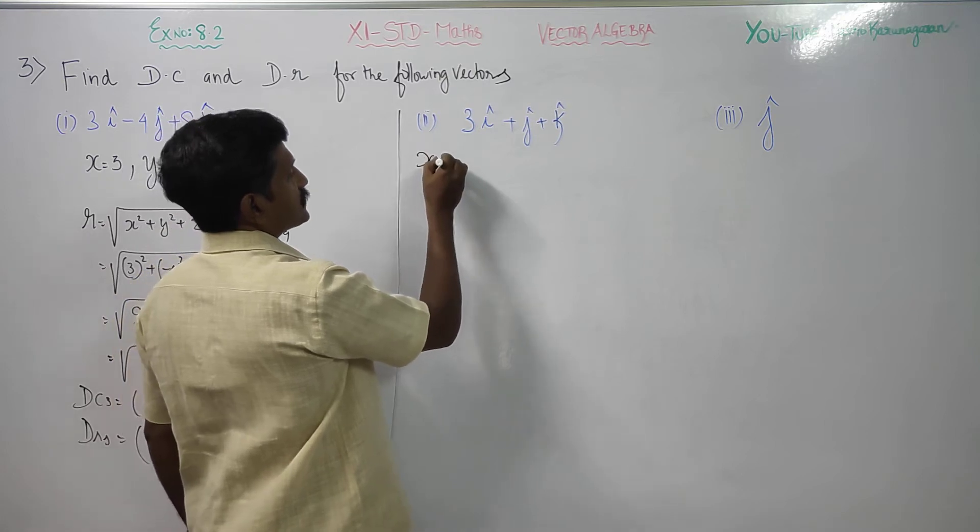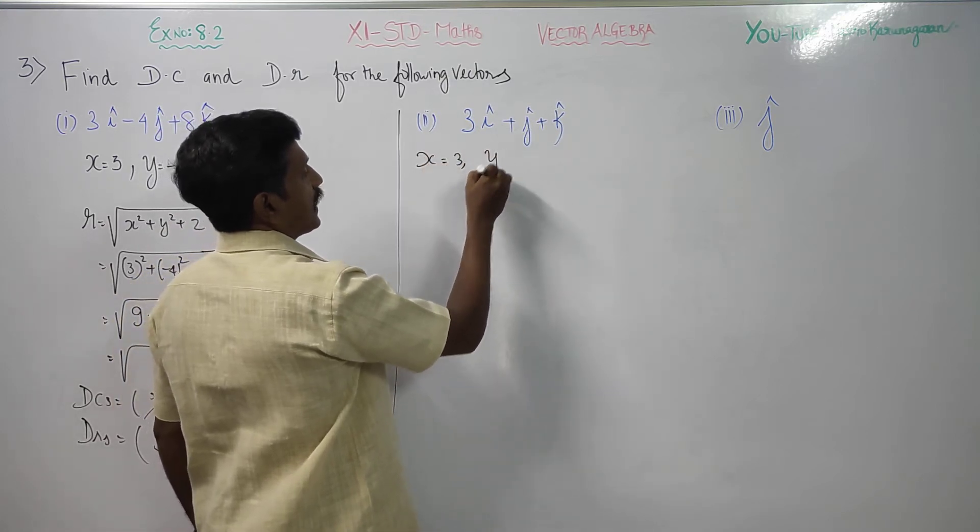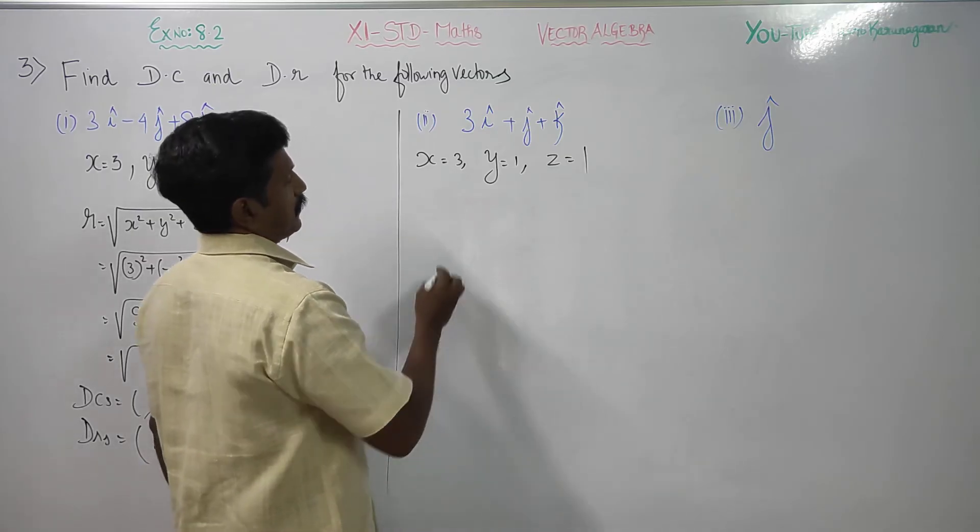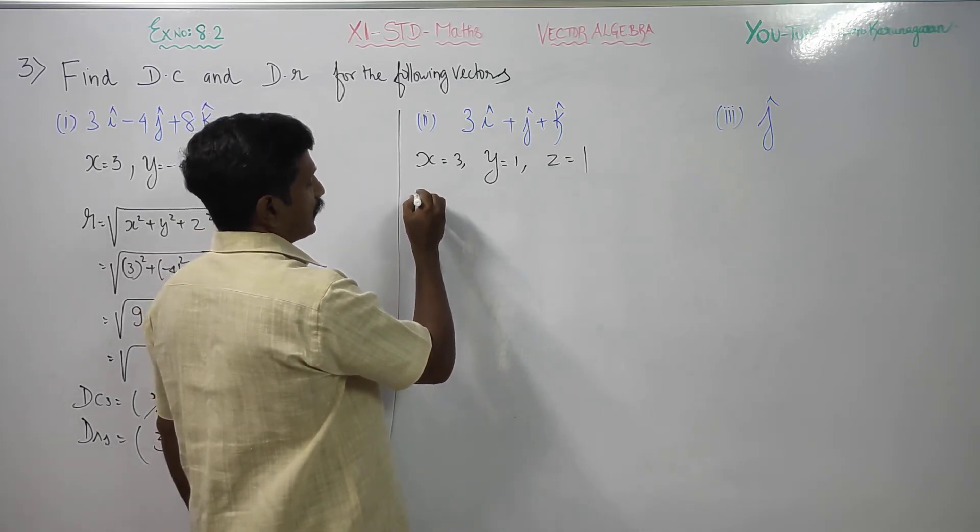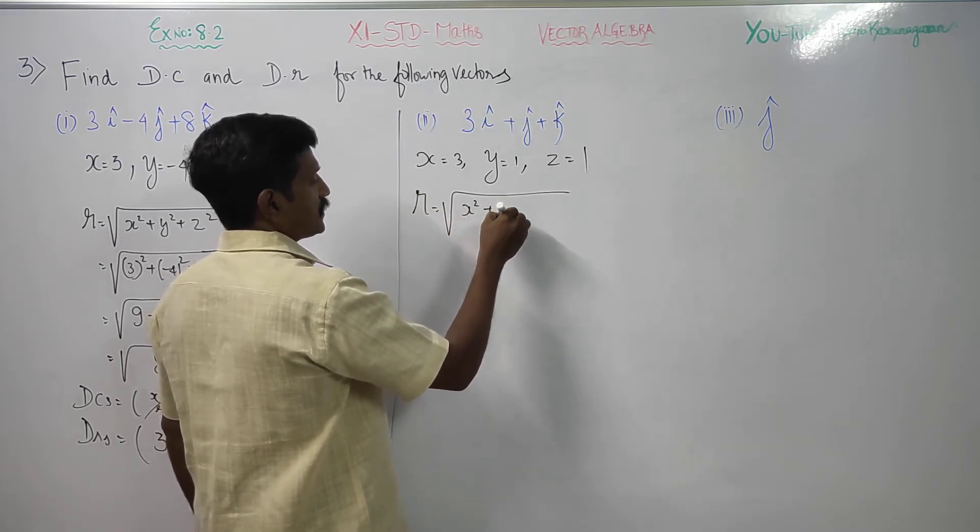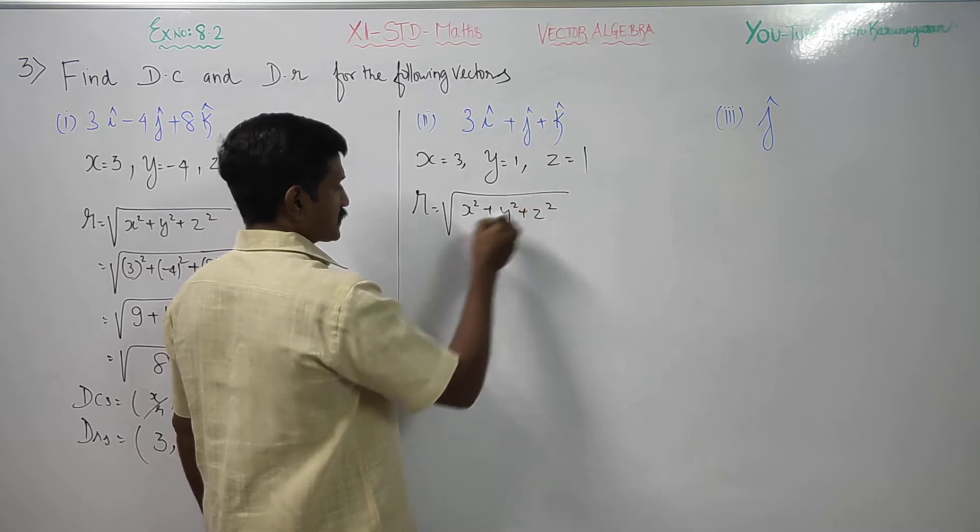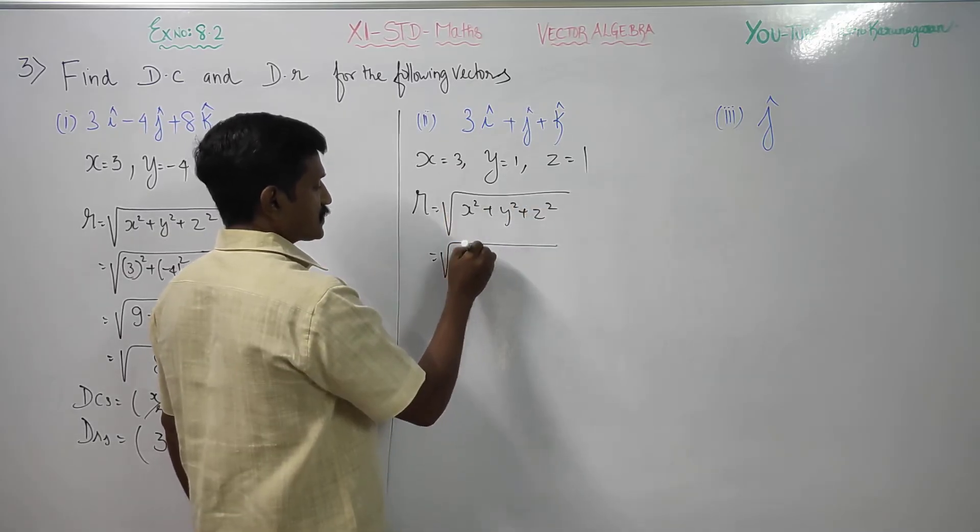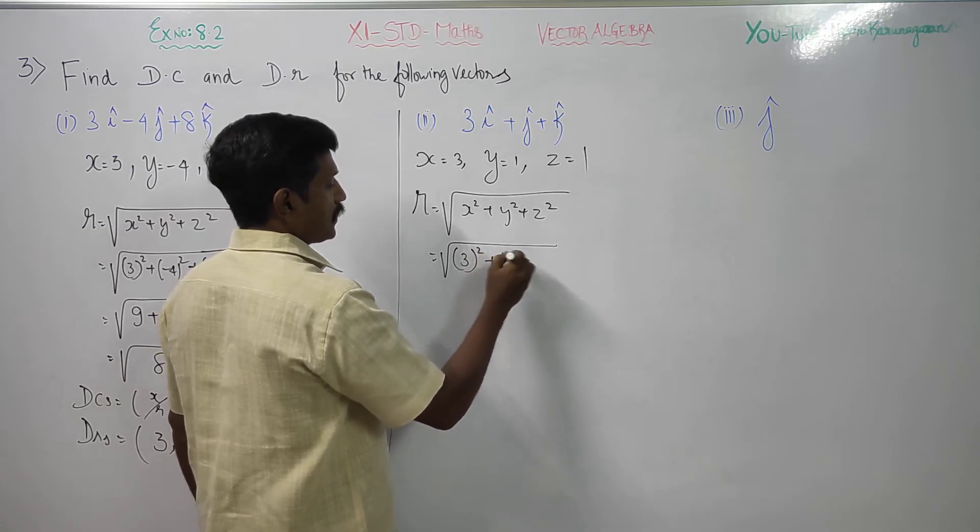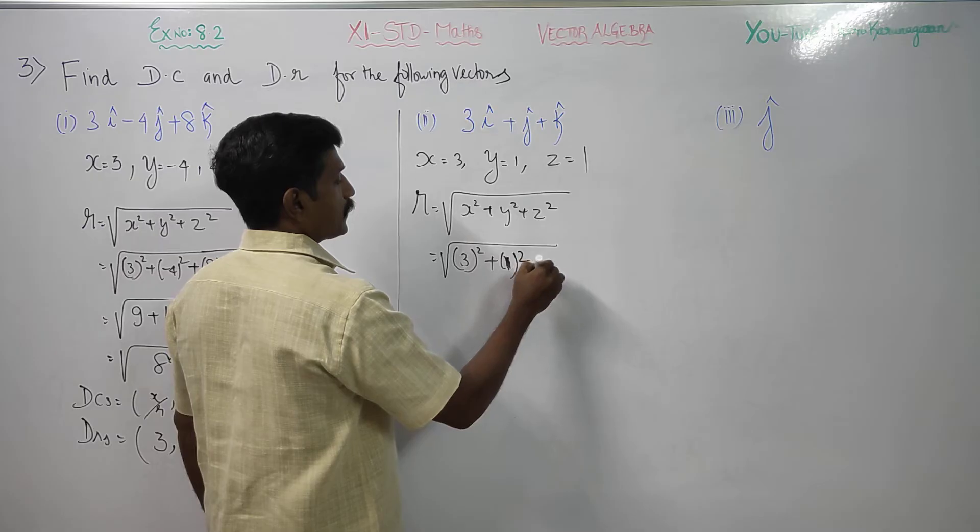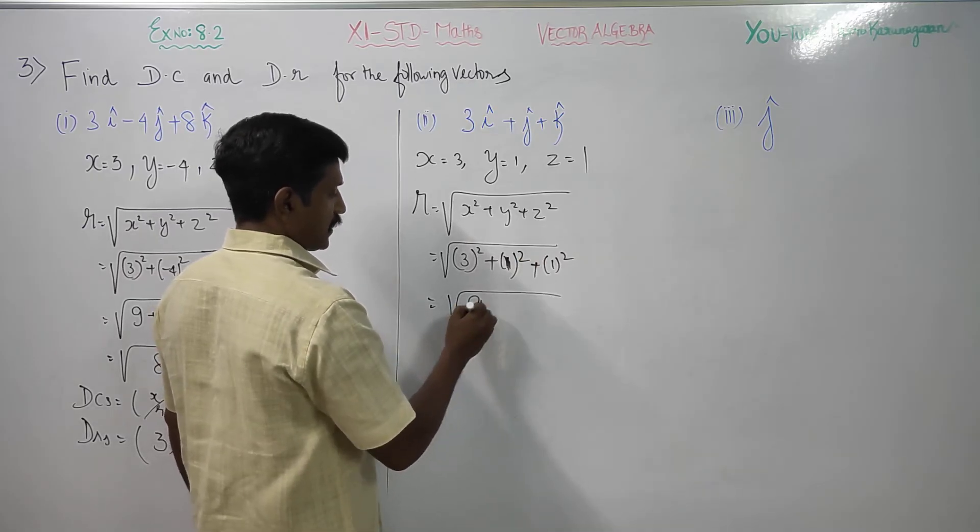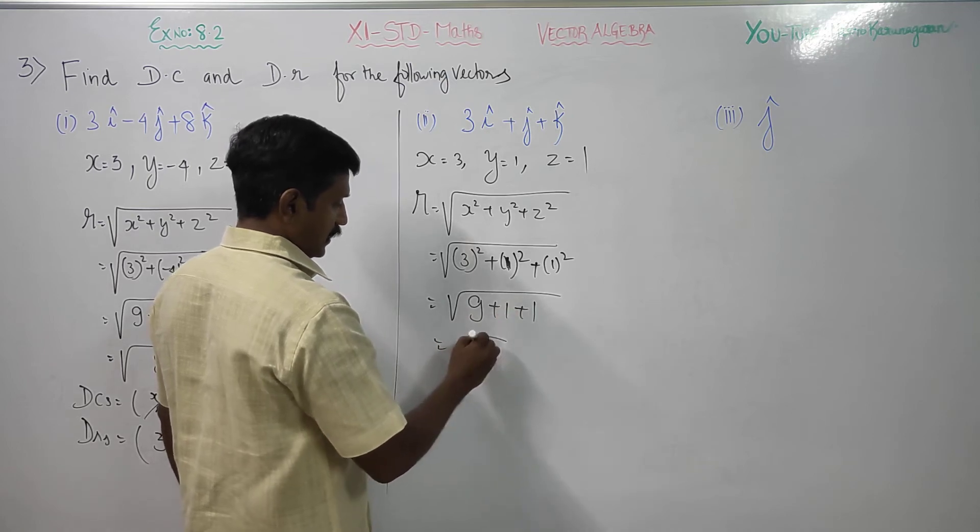my x value is 3, y value is 1 and z value is also 1. First of all, I will find r. r is equal to square root of x square plus y square plus z square. The square root of 3 square plus 1 square, 1 square, then plus again 1 square. Therefore my 3 square is 9, 1 square is 1 and again this is 1, so 11.